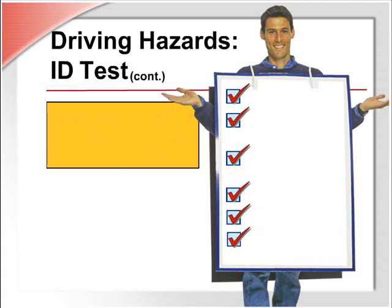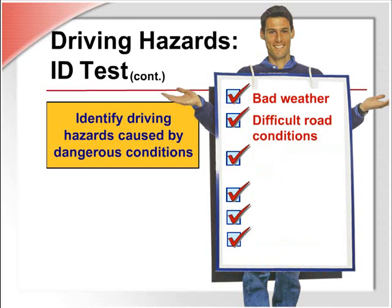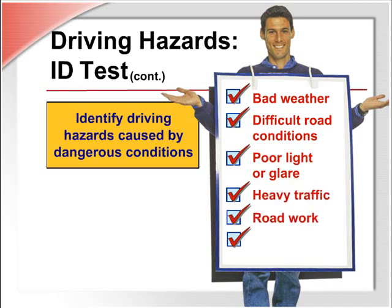See how many driving hazards caused by dangerous conditions you can think of in five seconds. Driving hazards caused by dangerous conditions include bad weather, difficult road conditions including sharp curves, busy intersections, uneven surfaces or obstacles, poor light or glare, heavy traffic, road work, and accidents. Were you able to identify the hazards correctly?